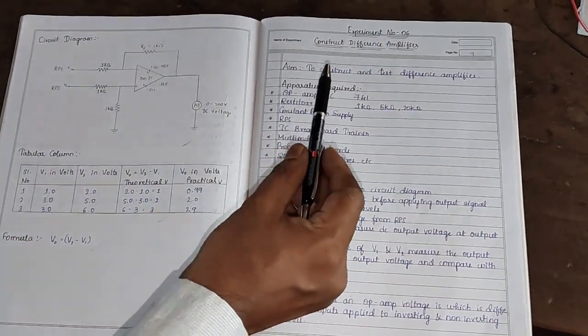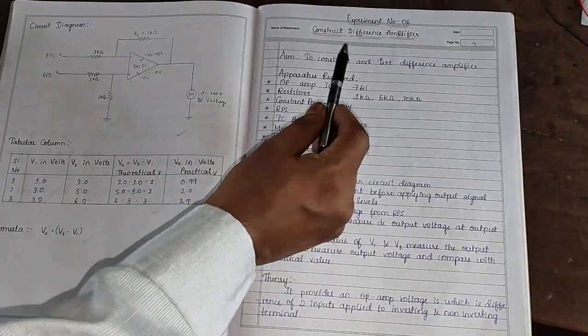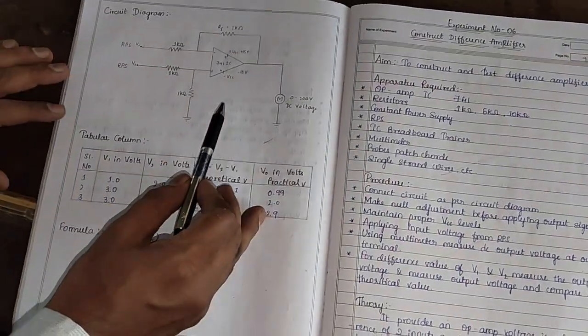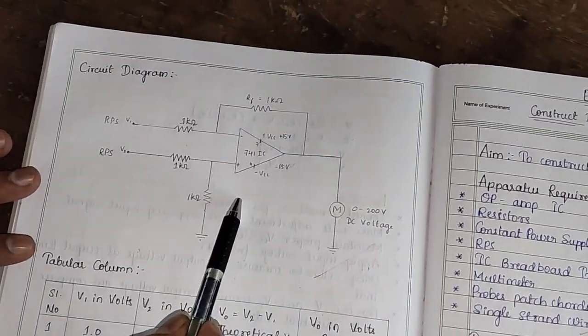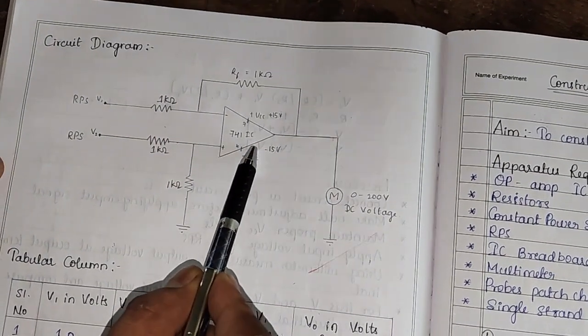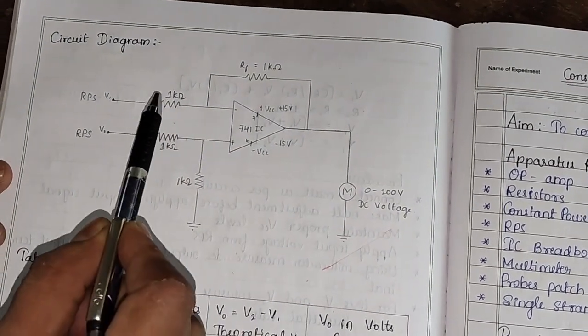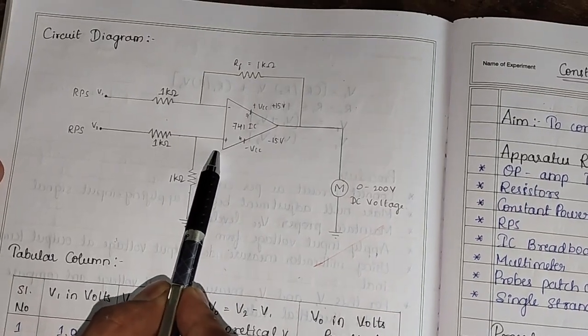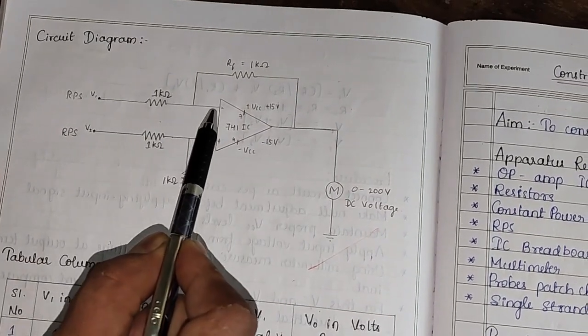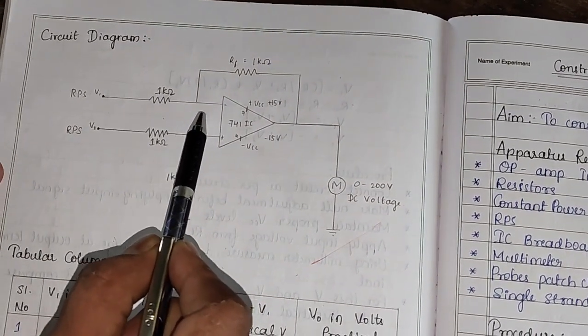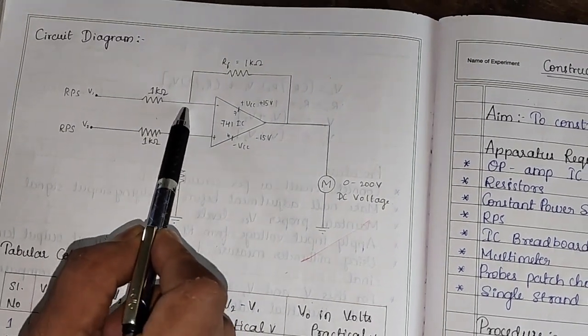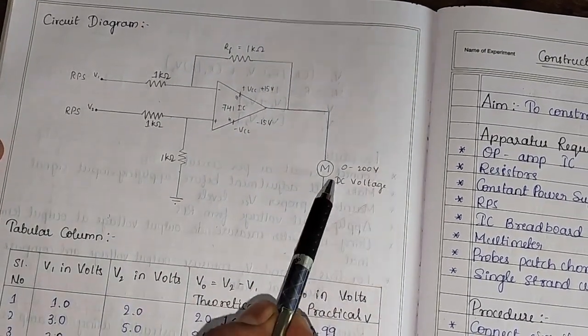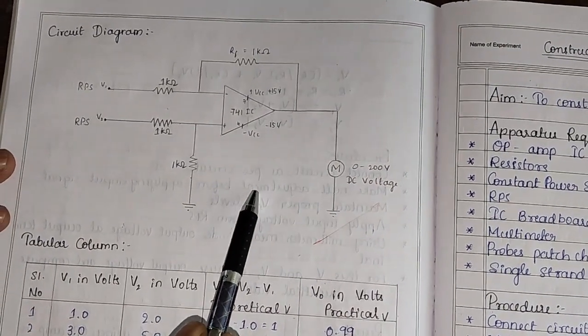In this video, we will show how to perform a difference amplifier using op amp. In this circuit, it consists of an op amp IC that is 741 and two resistors are connected at pin number 3 and one resistor is connected at pin number 2 and one feedback resistor is connected between pin number 2 and pin number 6. This is the circuit of difference amplifier using op amp.